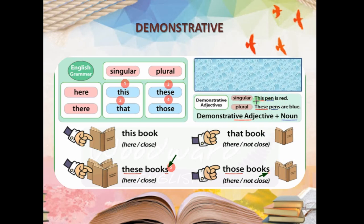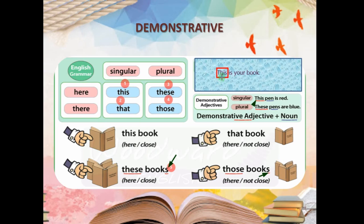'This pen is red' — demonstrative adjective, nearby and singular. 'These pens' — demonstrative adjective, plural and nearby. Important: if someone writes just 'This is your book,' the word 'this' here is NOT a determiner. Why? Because determiners always qualify a noun directly after them. In 'This is your book,' 'this' stands alone without a noun following it — so it is actually a pronoun. We will learn that in the next chapter.